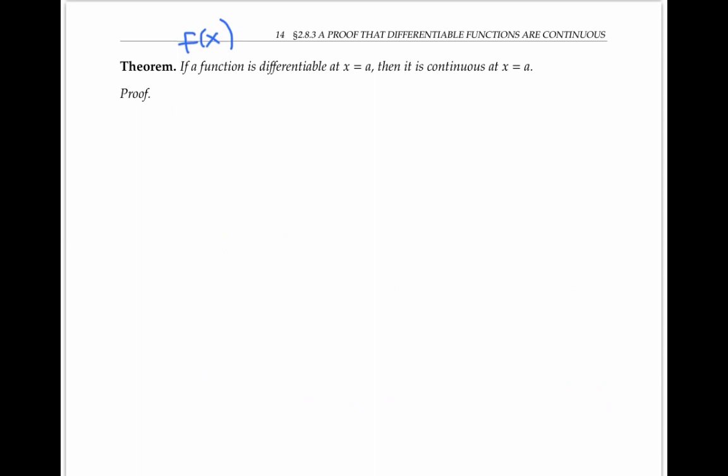That means that the limit as x goes to a of f of x minus f of a over x minus a exists and equals this finite number that we call f prime of a.